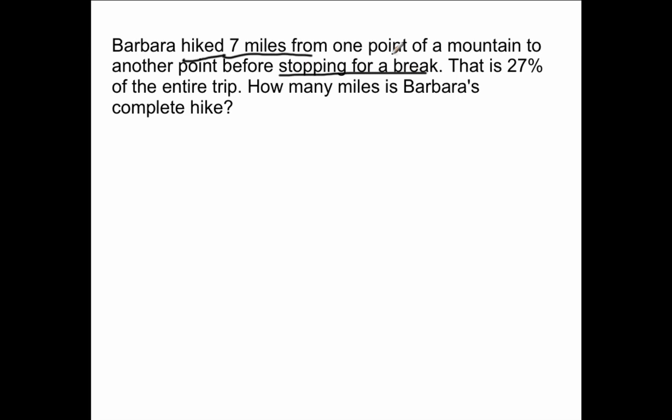Barbara hiked 7 miles from one point of a mountain to another point before stopping for a break. So she stopped for a break. But before she did that, she hiked 7 miles. That, what is that? That is the 7 miles that she hiked. Therefore, the 7 miles is 27% of the entire trip. That means the 7 miles are the part of the trip. Because 27% is a part of a whole and not the whole trip, which is 100%. How many miles is Barbara's complete hike? We're trying to find Barbara's whole hike.